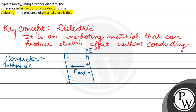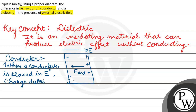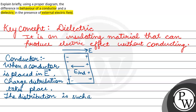When a conductor is placed in an electric field, charge distribution takes place. The distribution is in such a way that the electric field is zero inside the conductor.